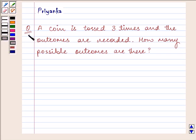Hi and how are you all today? The question says a coin is tossed three times and the outcomes are recorded. How many possible outcomes are there? So let us first understand the question.